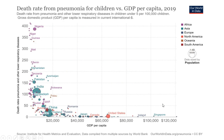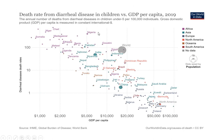The death rate from pneumonia for children versus GDP per capita: the death rate from pneumonia and other lower respiratory diseases is falling as GDP per capita increases. Similarly, looking at death rate from diarrheal disease in children versus GDP per capita — a negative relationship — as GDP per capita rises, this death rate from diarrheal diseases falls.